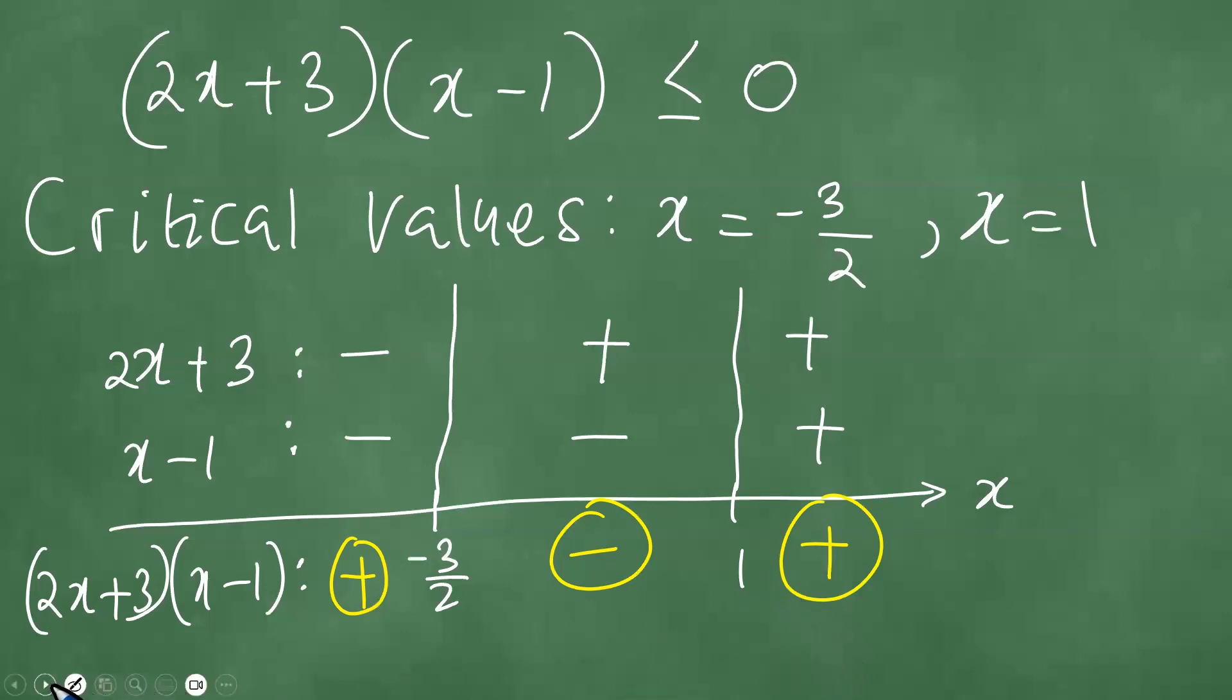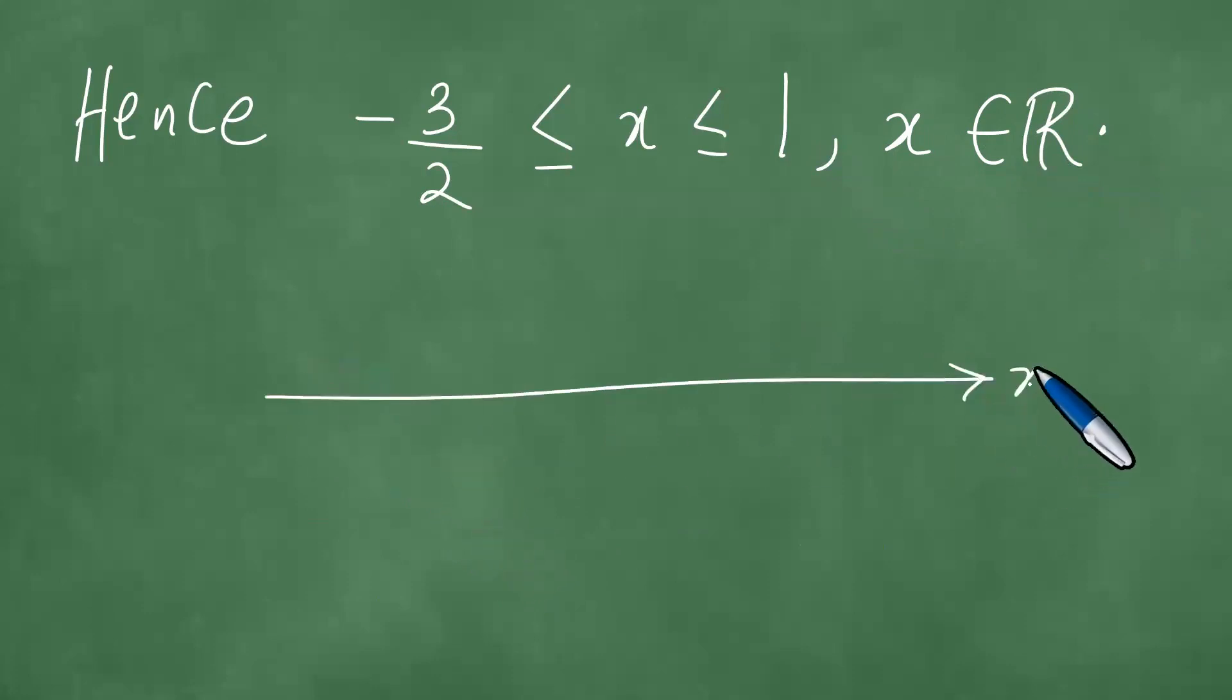Therefore, we have the solution as follows: hence, -3/2 ≤ x ≤ 1. But we understand at this point that x is an element of the set of real numbers. This solution can be sketched on the real line. We have -3/2, we have 1, and we shade like this. So we realize that this is the solution to this problem, and we have solved this question in detail.